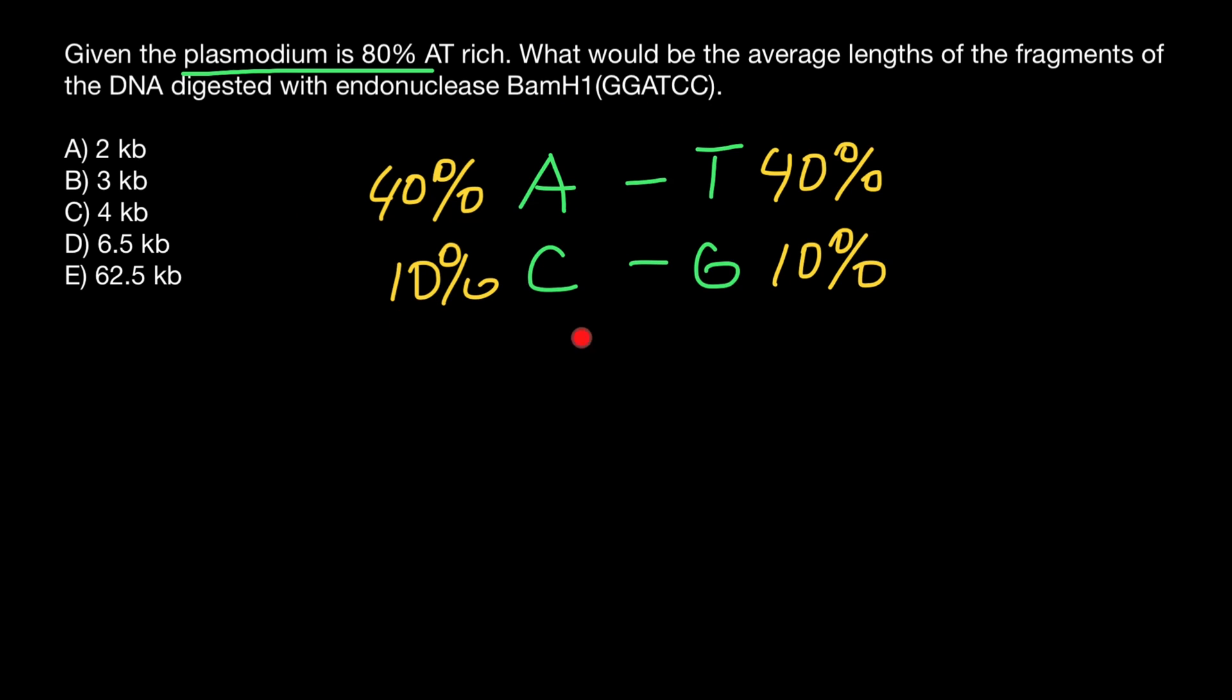Now we have 100% if we add all these numbers. Now take a look at this sequence of the recognition site. Let's say that each empty box would represent one position in this recognition site. We have six nucleotides.